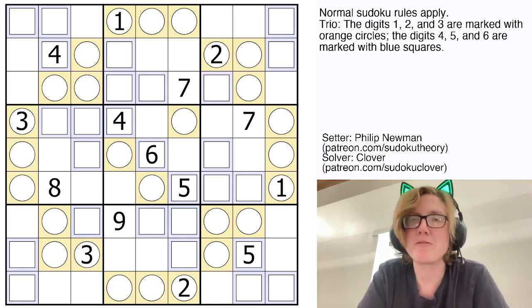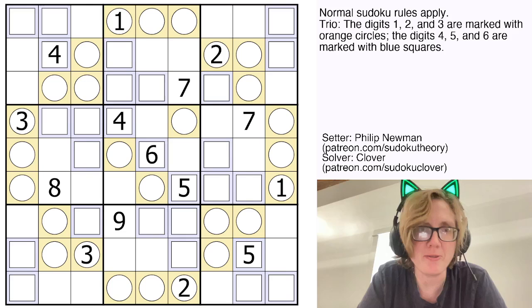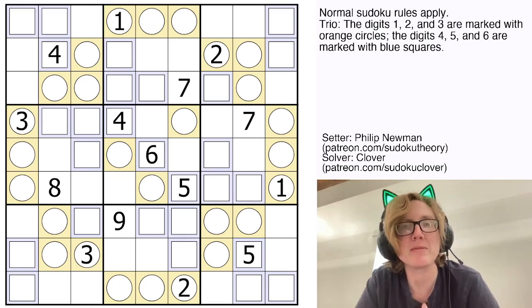So what are the rules? Normal Sudoku rules, so placing the digits 1 through 9 once each in each row, each column, and each outlined 3x3 region.